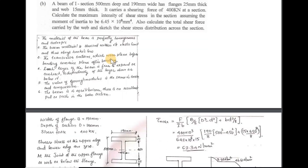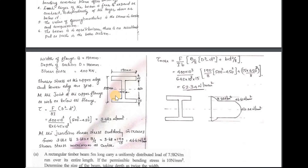To explain the problem: the I-section has a total depth of 500 mm and a width of 190 mm. The flange thickness is 25 mm and the web thickness is 15 mm. The section carries a shear force of 400 kN. The moment of inertia of the section is 6.45 × 10⁸ mm⁴. We want to show the shear stress at different points and plot the shear stress distribution diagram.